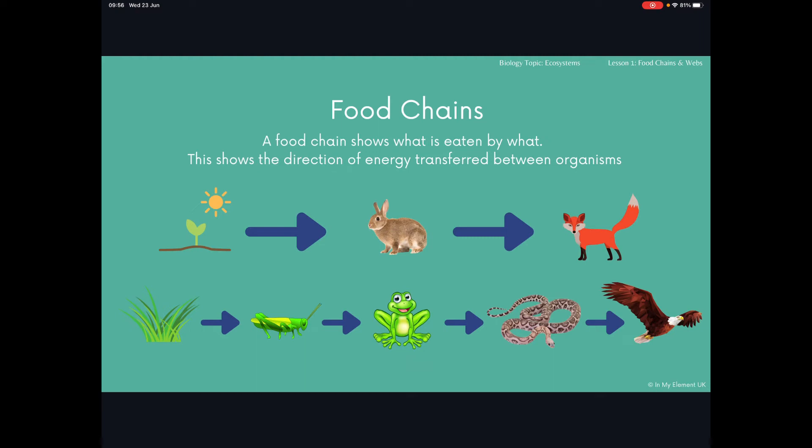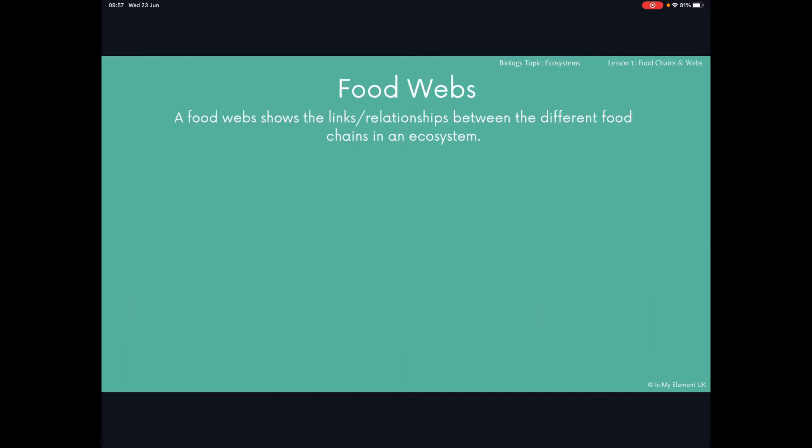Food chains are just one example of a relationship within an ecosystem. Within that ecosystem and a specific habitat there are many organisms and many food chains. We show how those food chains are linked together by a food web. I'm going to show you the food web all together because it's easier that way and then we can take a little look.